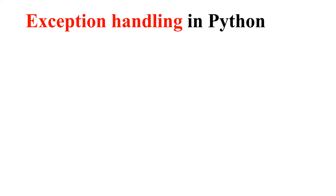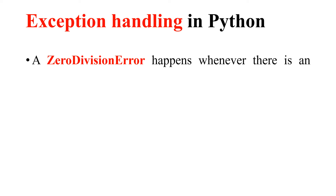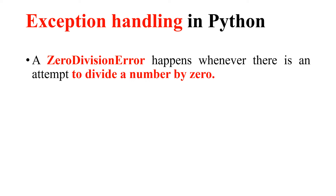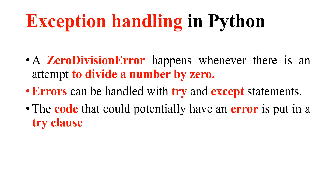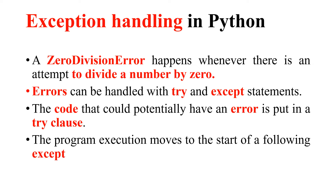Now we shall consider exception handling in Python. A ZeroDivisionError happens whenever there is an attempt to divide a number by zero, which is what we saw. The task is to handle this in Python code. Errors can be handled with `try` and `except` statements. The code that could potentially have an error is put in a `try` clause. If an error occurs, program execution moves to the start of the following `except` clause.